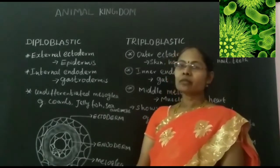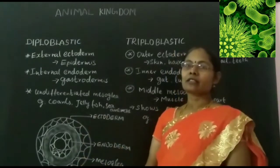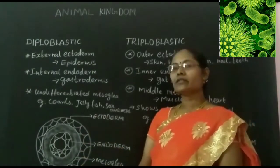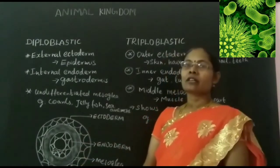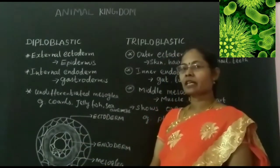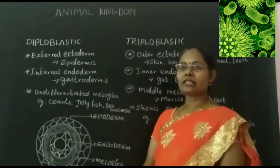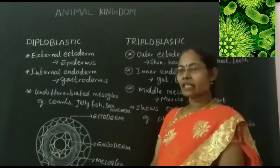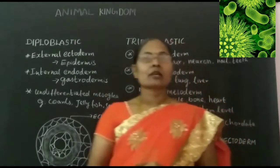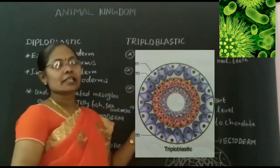In between the ectoderm and endoderm, there is a group of undifferentiated cells called mesoglea. Examples of Diploblastic animals are corals, jellyfish, and Ctenophora.